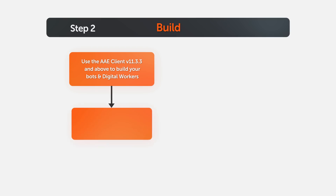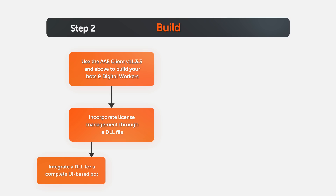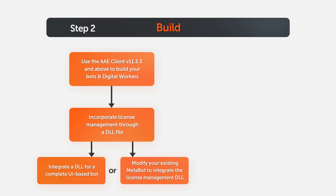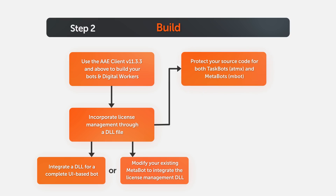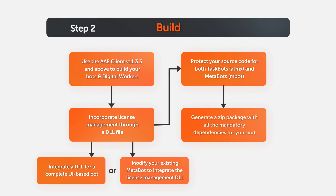License management can be incorporated in two ways: first, by integrating a pre-built license management metabot utility with a completely UI-based bot; or second, by modifying the existing DLL to integrate the reference license DLL. Code protection can be applied to both task bots and metabots. You can also generate a zipped bot package with all the dependent files directly from the Automation Anywhere Enterprise Client.